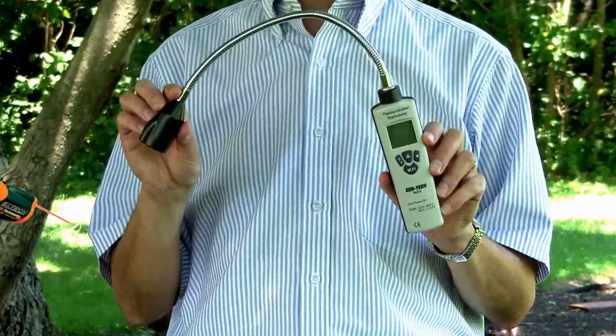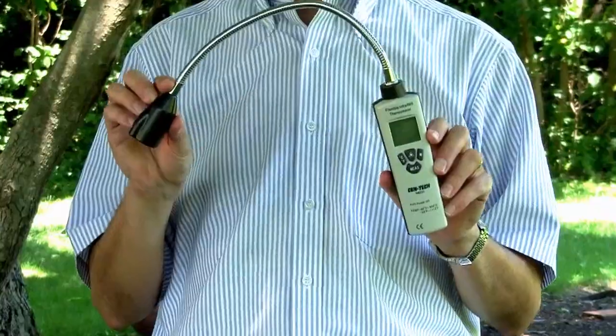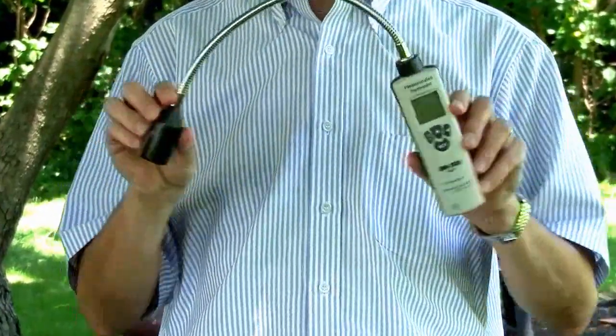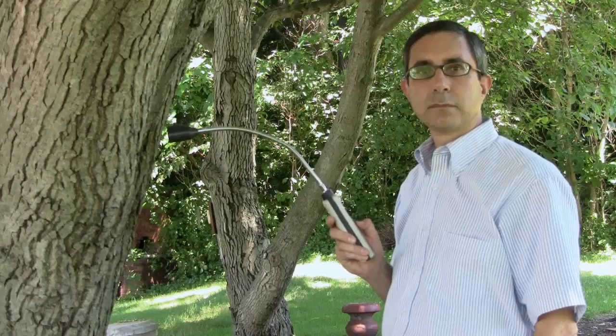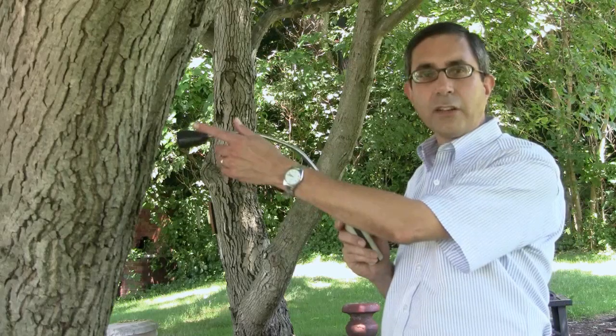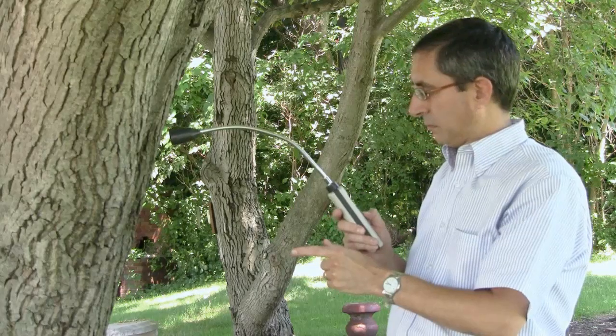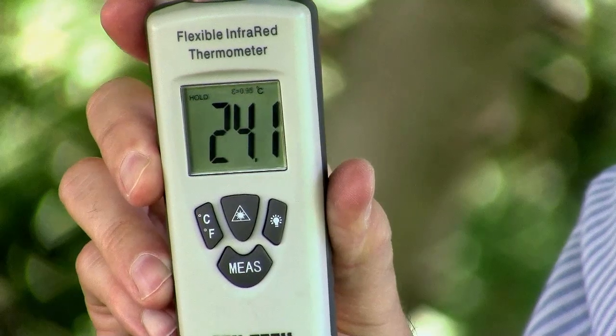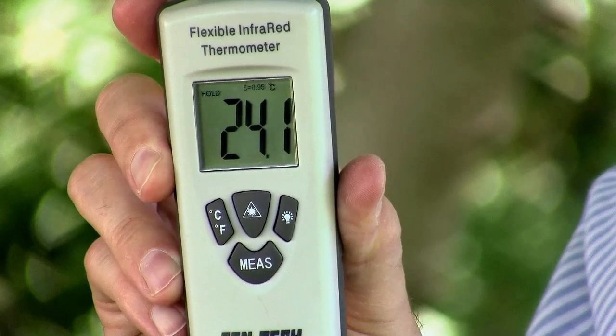Most thermometers have a pistol grip. This one has a flexible neck that makes it easier to reach out of the way places. The sensor is here at the end of the neck. When I point it at an object, the thermometer gives the surface temperature. That's about 24 degrees Celsius. Bill's neck, 30.2.